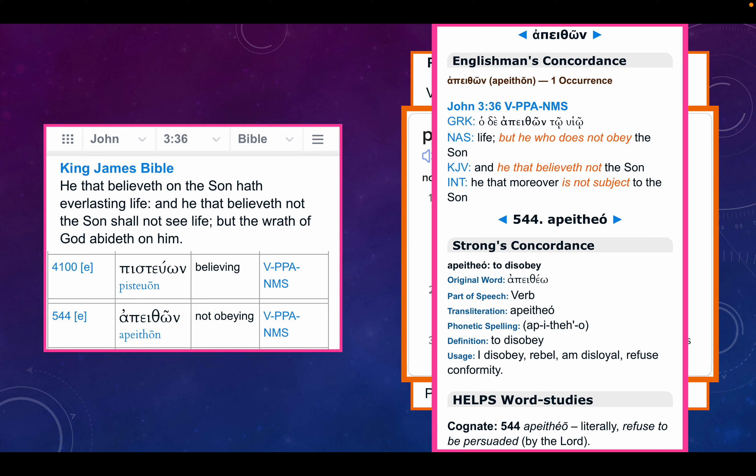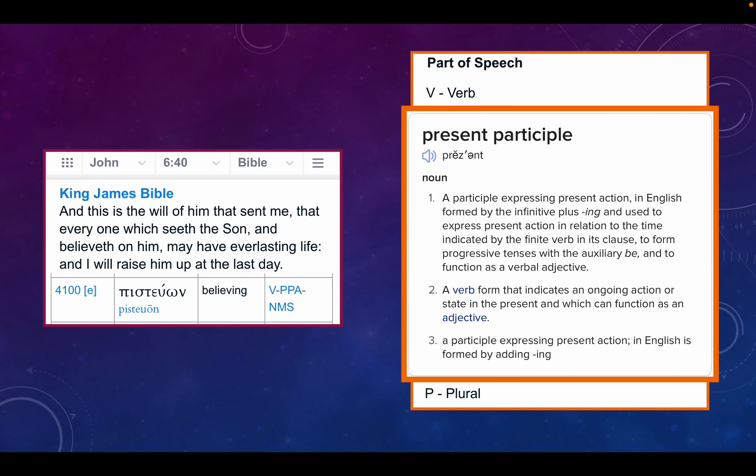So, the one who is believing, present participle, in the Son hath everlasting life. The one not obeying the Son, refusing to be persuaded by the Son, shall not see life, but the wrath of God abideth on him. John 6 verse 40. And this is the will of him that sent me, the will of the Father, that everyone which seeth the Son and believeth on him may have everlasting life, and I will raise him up at the last day. Again, pisteon, believing, present participle, ongoing belief.